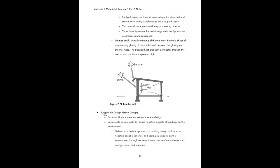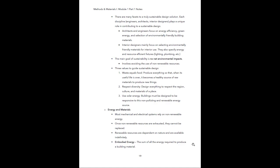Next, sustainable design practices. Sustainability — or green design — is a major concern in modern design. Sustainable design seeks to reduce negative impacts of buildings on the environment. Its official definition is a holistic approach to building design that reduces negative social, economic, and ecological impacts through conservation and reuse of natural resources like energy, water, and materials. There are many facets to a truly sustainable design solution, and each discipline — engineers, architects, interior designers — plays a unique role in contributing to a sustainable design with different responsibilities.